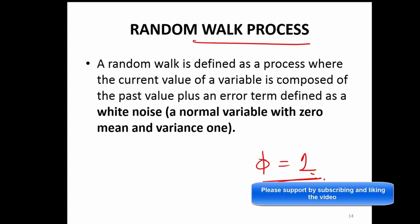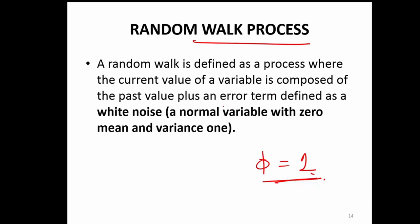So, how do we define a random walk? A random walk is defined as a process where the current value of the variable is composed of the past value plus an error term. So, there are two important things in a random walk series: you have the past value term and the error term, nothing more than that. So, yt is the current value — it is just the past value plus an error term at.